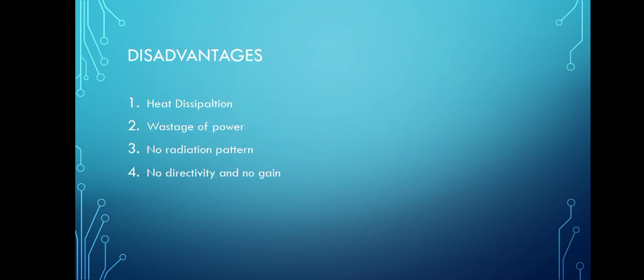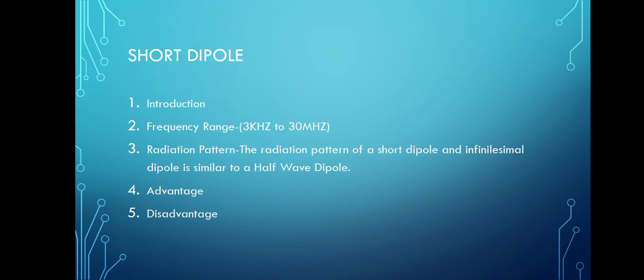Disadvantages of the full-wave dipole antenna: heat dissipation, wastage of power, no radiation pattern, no directivity, and no gain. Due to these drawbacks, the full-wave dipole is seldom used.